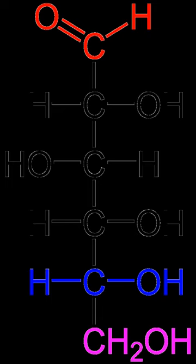The aldehyde or ketone group of a straight-chain monosaccharide will react reversibly with a hydroxyl group on a different carbon atom to form a hemiacetal or hemiketal, forming a heterocyclic ring with an oxygen bridge between two carbon atoms. Rings with five and six atoms are called furanose and pyranose forms, respectively, and exist in equilibrium with the straight-chain form. During the conversion from straight-chain form to the cyclic form, the carbon atom containing the carbonyl oxygen, called the anomeric carbon, becomes a stereogenic center with two possible configurations. The resulting possible pair of stereoisomers is called anomers.